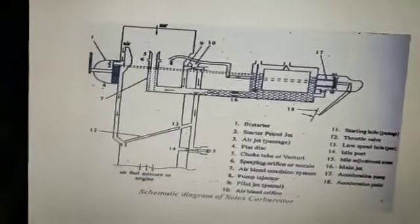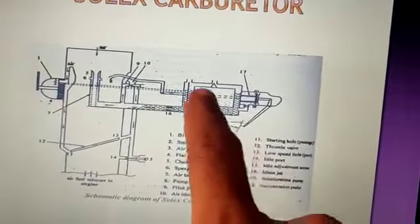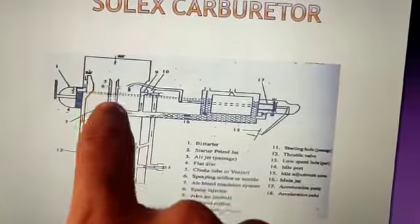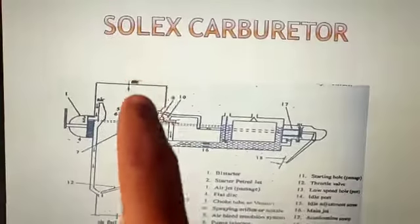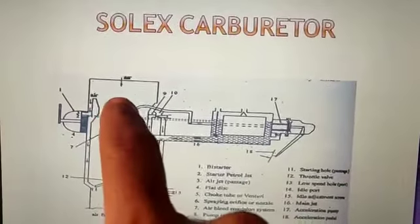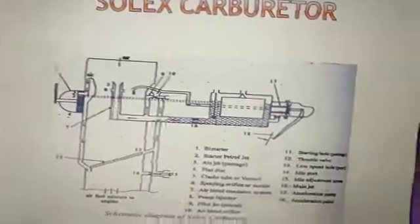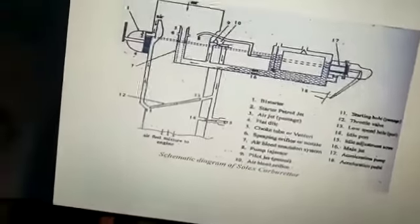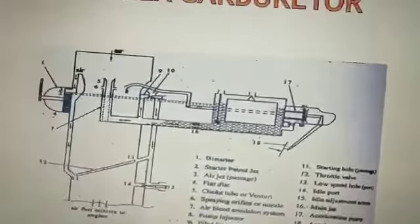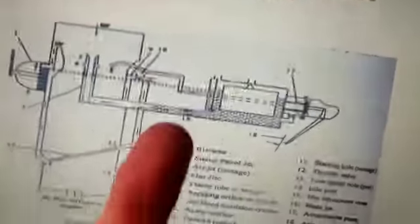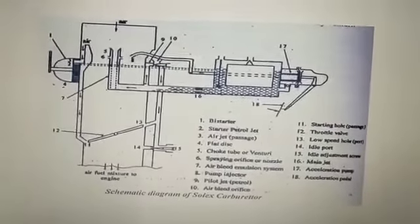In simple terms, the fuel tank always supplies fuel here. This fuel comes to the nozzle, and when air comes in from this end, it vaporizes the fuel and carries it forward. When you accelerate by pushing the pedal, the throttle valve opens — it moves from closed to vertical open position — and supplies the air-fuel mixture to the cylinder.